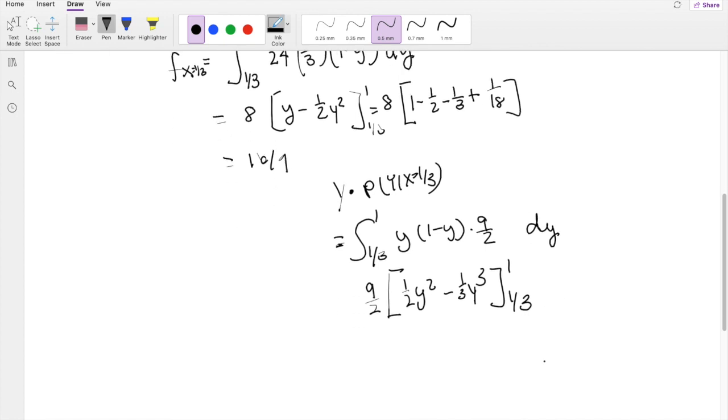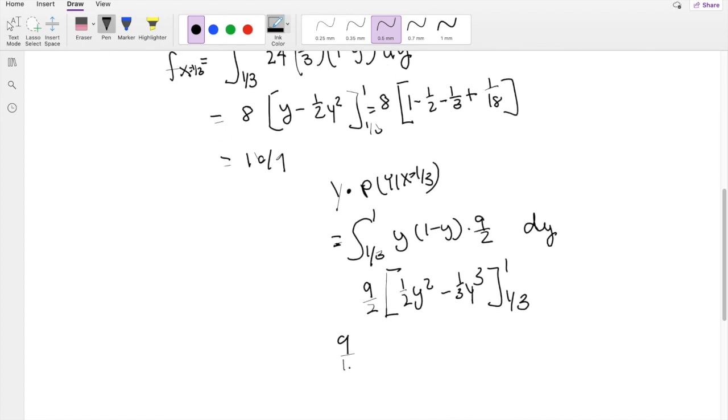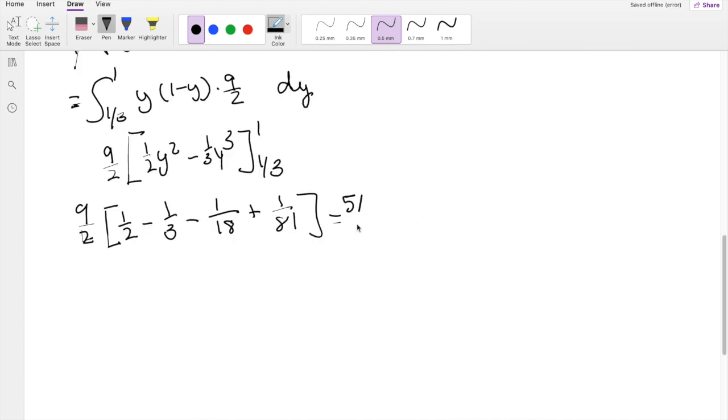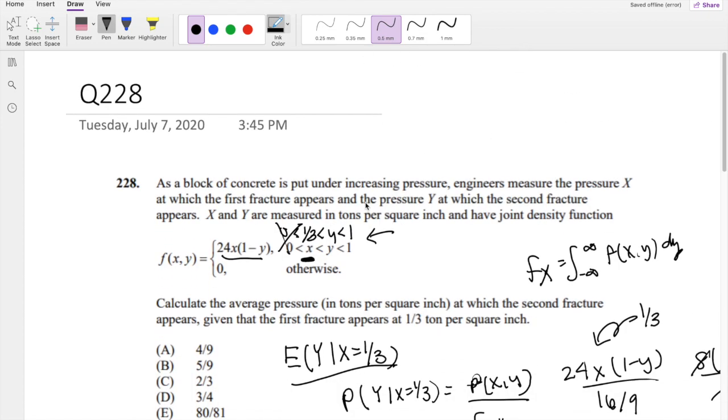So let me type that into my calculator real quick. The constant's still outside. One half, minus one third, minus one eighteenth, plus one over eighty-one. This is equal to five ninths, which is our answer B.